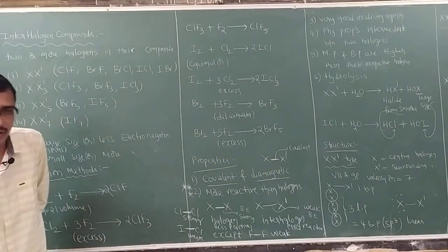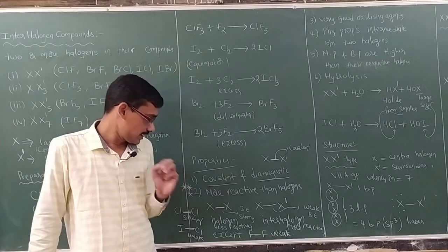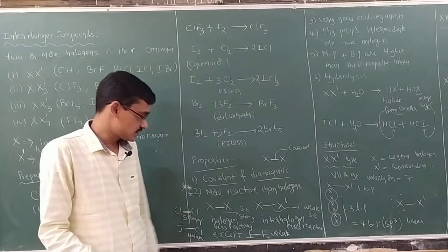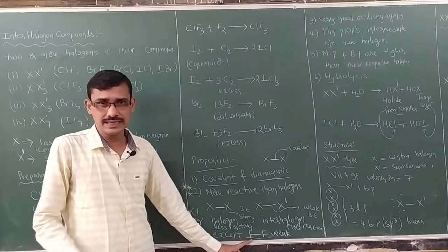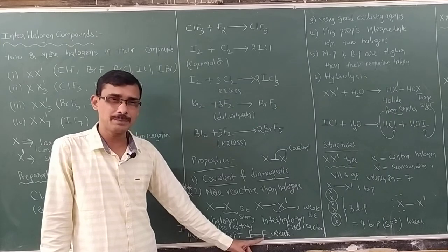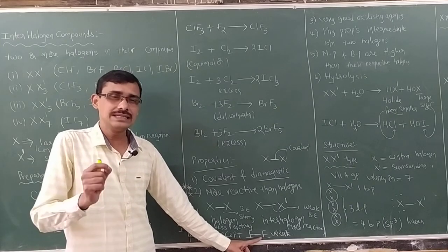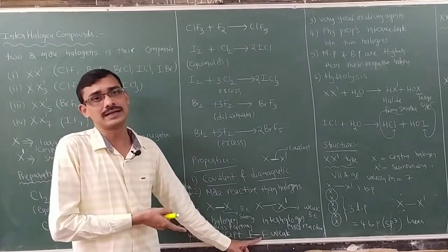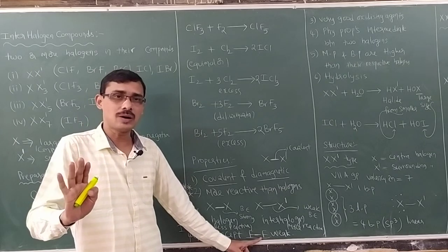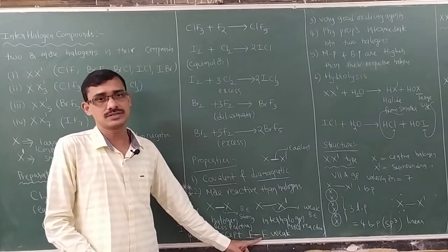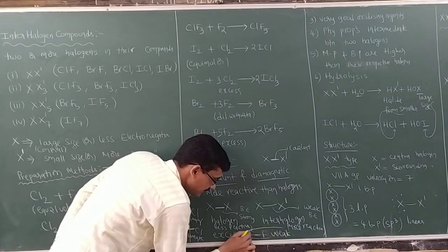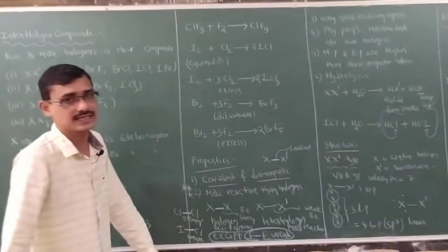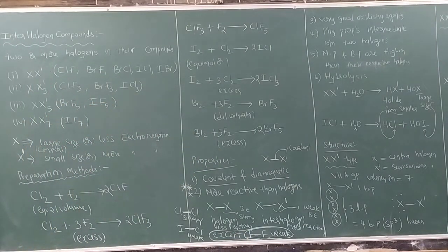Interhalogen compounds are more reactive than halogens because of less bond energy — except in comparison with fluorine (F2). Fluorine has more lone pair repulsions, so its bond energy is exceptionally low. Interhalogen compounds have more bond energy than F2, making F2 the exception. This is a very important point.